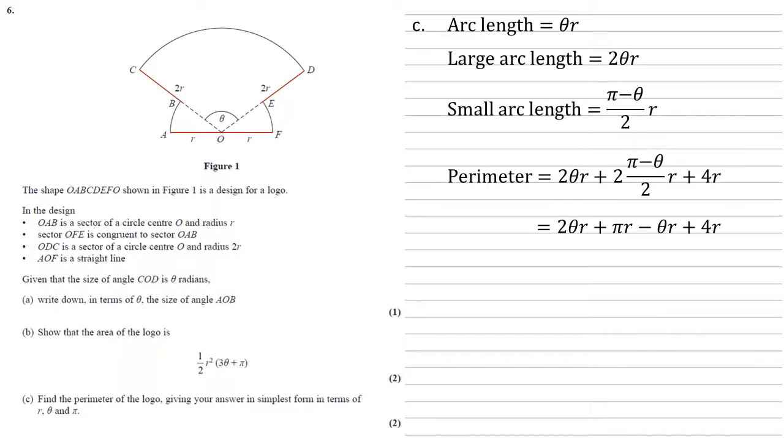We can now bring some terms together because we've got 2θR minus θR. So that just leaves us with θR. We've still got the πR and the 4R there.